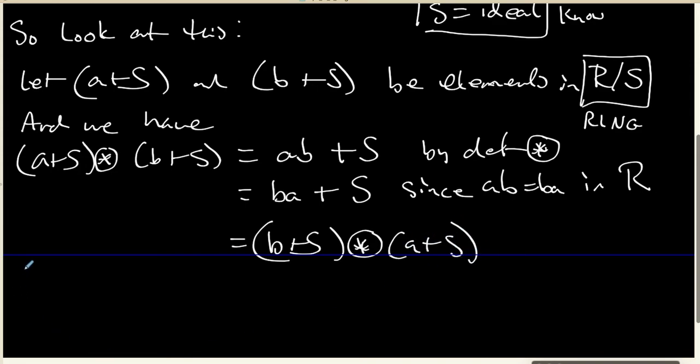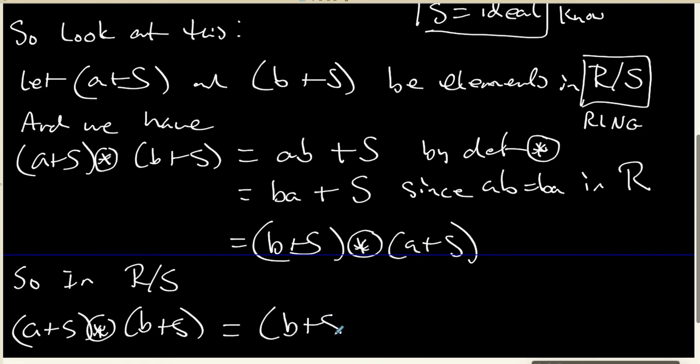And so what we now have is that inside the quotient ring R mod S, A plus S times B plus S is exactly the same as B plus S times A plus S.